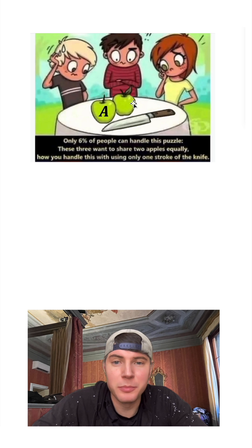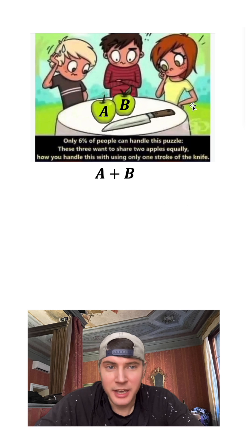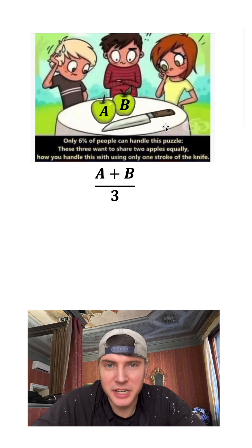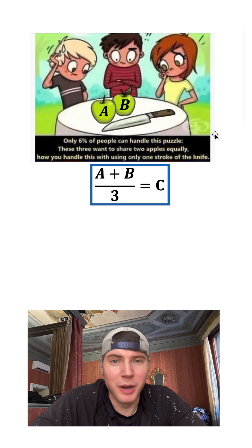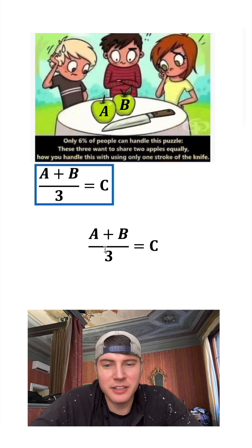The total volume of apples that we have is A plus B, and to split it three ways we're going to divide by three and let's set that equal to C. Let's put a box around it. Let's copy this equation down again.